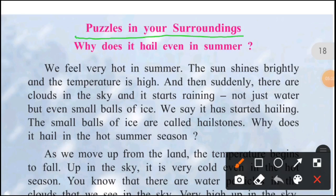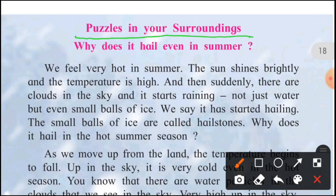Next: Puzzles in Your Surroundings — aajwaju ki paheliyan. Why does it hail even in summer? Hail means ole — barf ke tukde jo paani ke saath girte hain. Garmi ke mausam mein ole kyun girte hain? Uska scientific reason kya hai — wo hum is lesson mein dekhne wale hain.